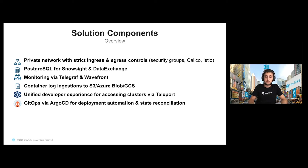We use Postgres for our two major applications, which are Snowsite and Data Exchange — this is what you see when you go to app.snowflake.com. For mission-critical infrastructure, we wanted to make sure we have good monitoring components in place, for which we use Telegraph and Wavefront. All of our application logs make their way into blob storage accounts on the respective cloud providers and are then imported into our internal Snowflake deployment, which helps our developers trace issues and look at certain events. We also use Teleport for a unified developer experience accessing all these deployments, and a GitOps workflow using Argo CD to deploy our manifests off of a Git branch and ensure the state is reconciled at all times.